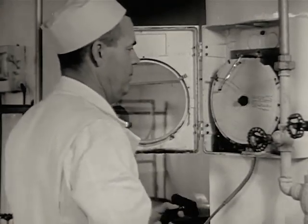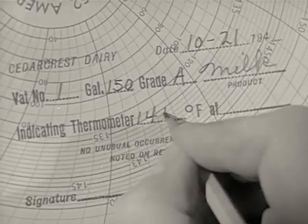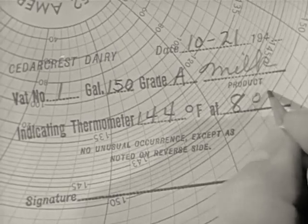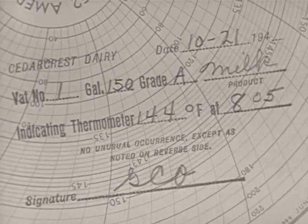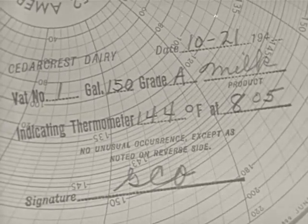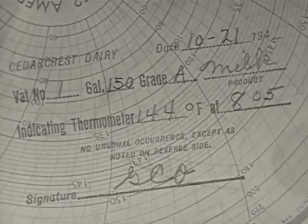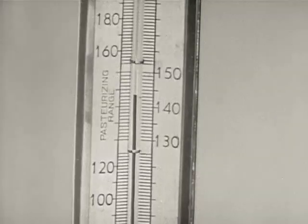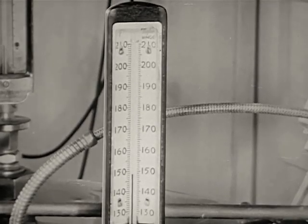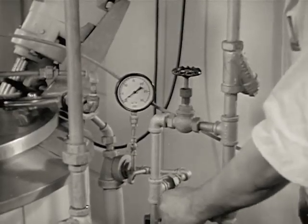Other important facts are entered on the chart. The airspace temperature is sometimes added. If anything unusual happens, such as a power failure, make a note of it on the back of the chart. As pasteurization continues, frequently check the indicating thermometer and the airspace thermometer. If they show the temperatures of the milk or airspace are too low or too high, adjust the steam valves to maintain correct temperatures.